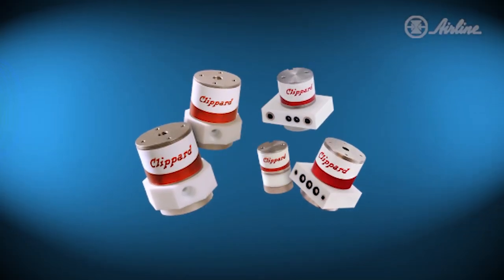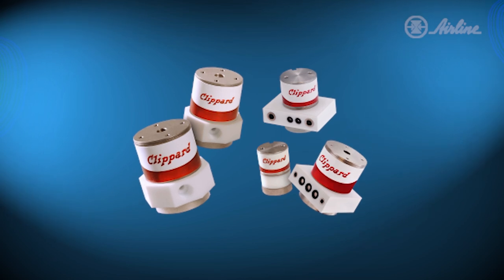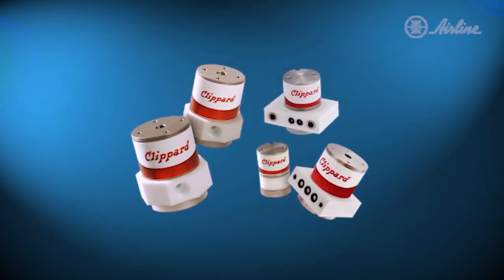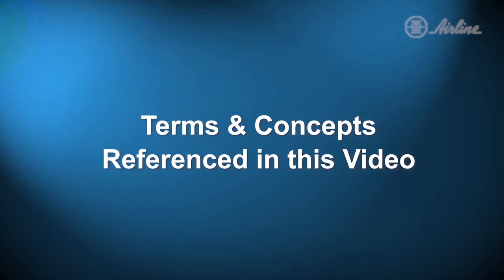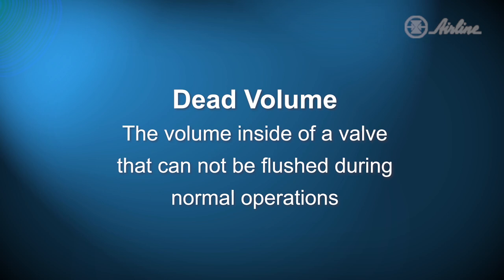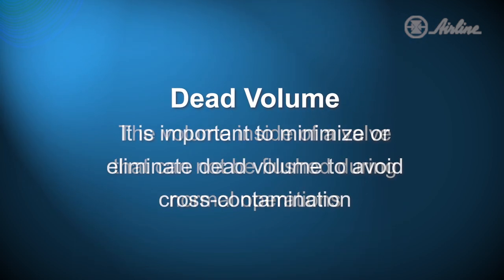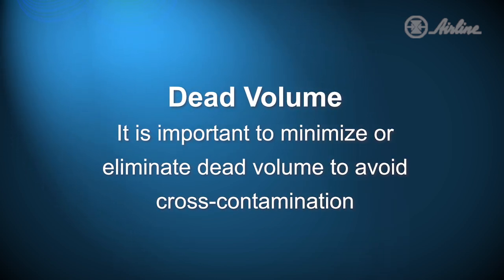Basically, whenever you use uncontaminated media you most likely need an isolation valve. They are a flexible solution that can be configured as a simple two-way device or as a multi-port selector or diverter. The first key term is called dead volume — the volume inside the valve that cannot be flushed during normal operation. Minimizing or eliminating dead volume is imperative when cross-contamination is a concern.